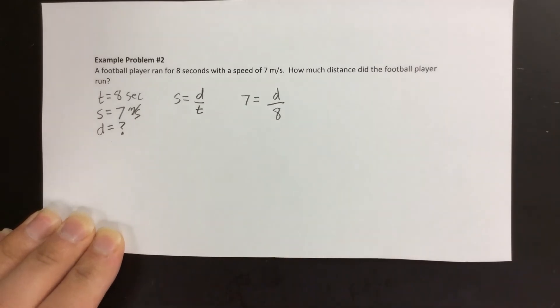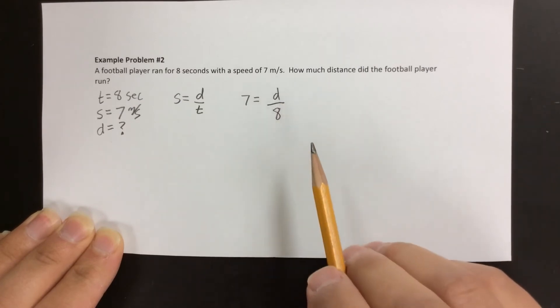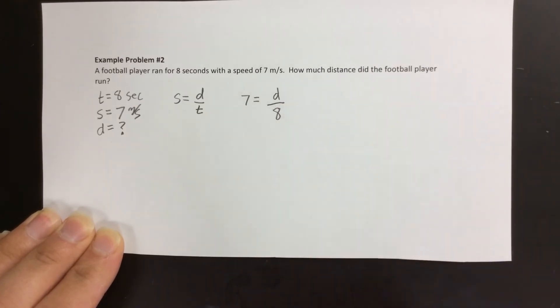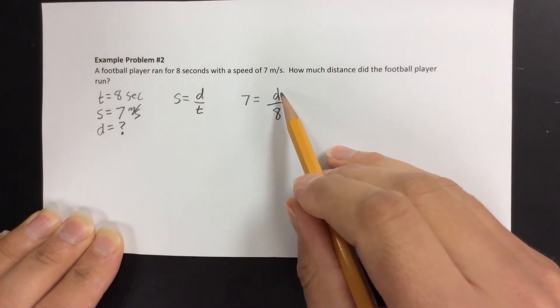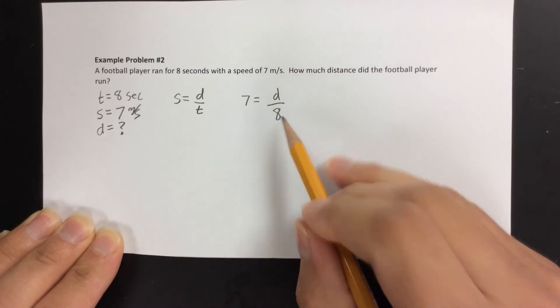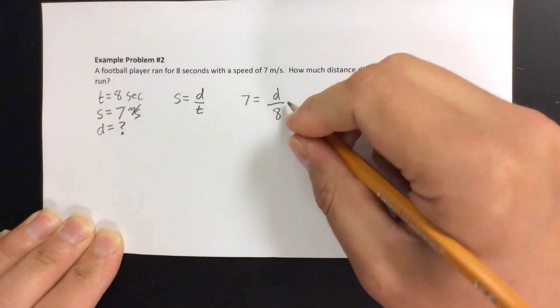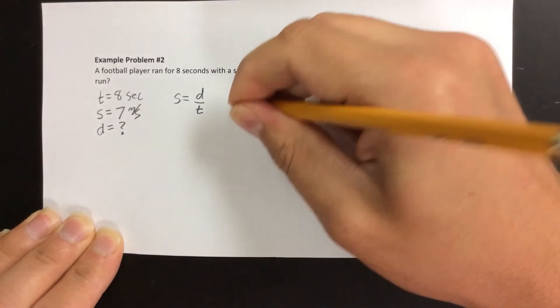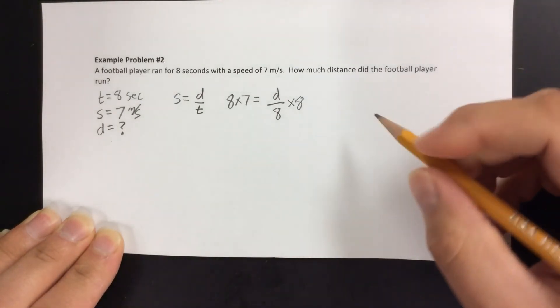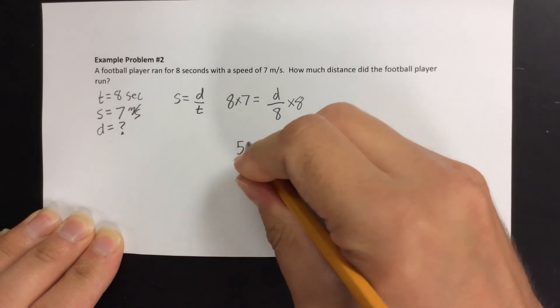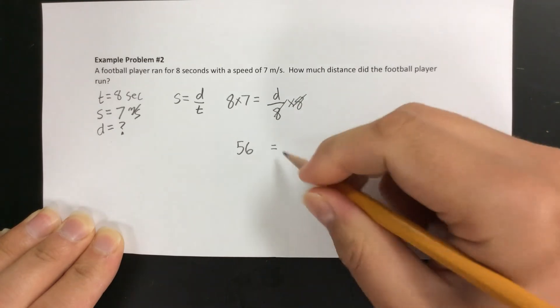That's our third step: plugging in the numbers. Our fourth step is to solve this. You have to show how you're getting D by itself - we have to do the same thing to both sides. Right now we have D divided by 8. To undo that division by 8, we multiply both sides by 8. So we're left with 8 times 7, which is 56, and D divided by 8 times 8, which gives us just D.